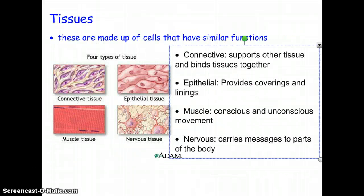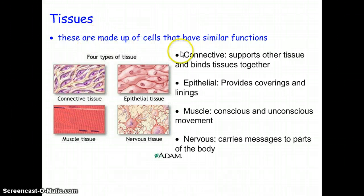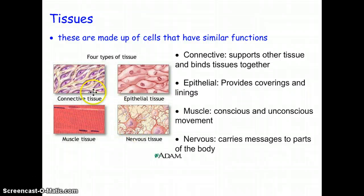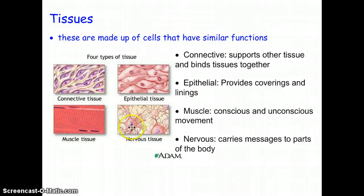With all those different types of cells, when you put them together they make up something called a tissue. Tissues are made up of cells that have similar functions. The four types of tissues we have are connective, epithelial — which basically means near the surface — muscle tissue, and nervous tissue.